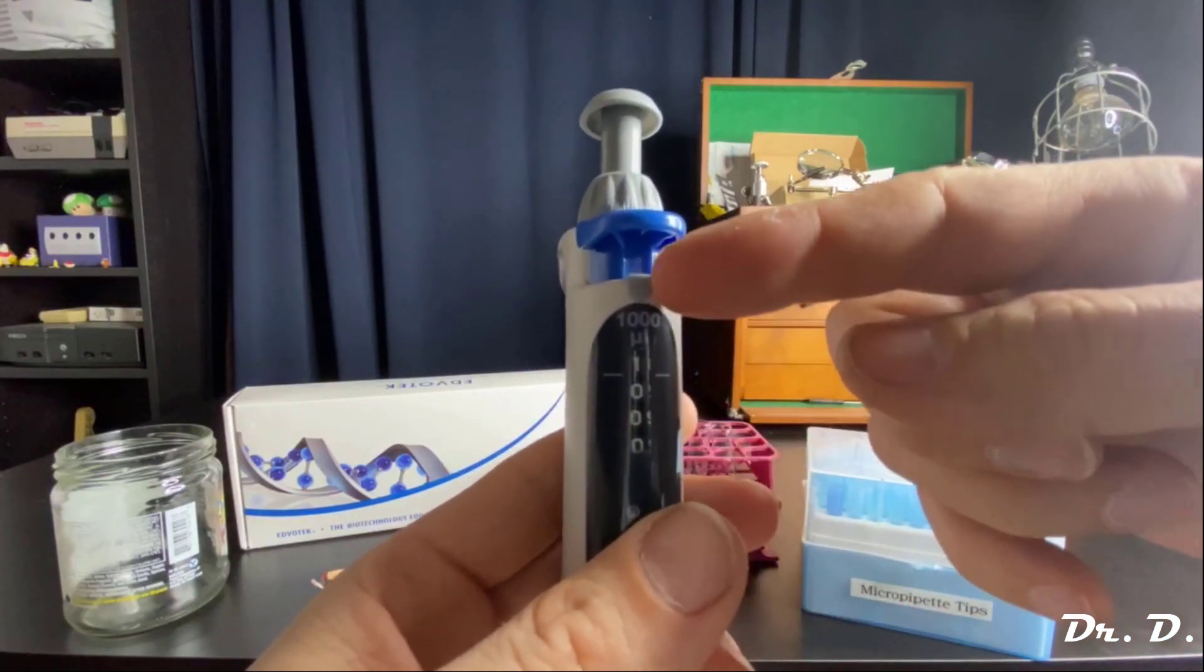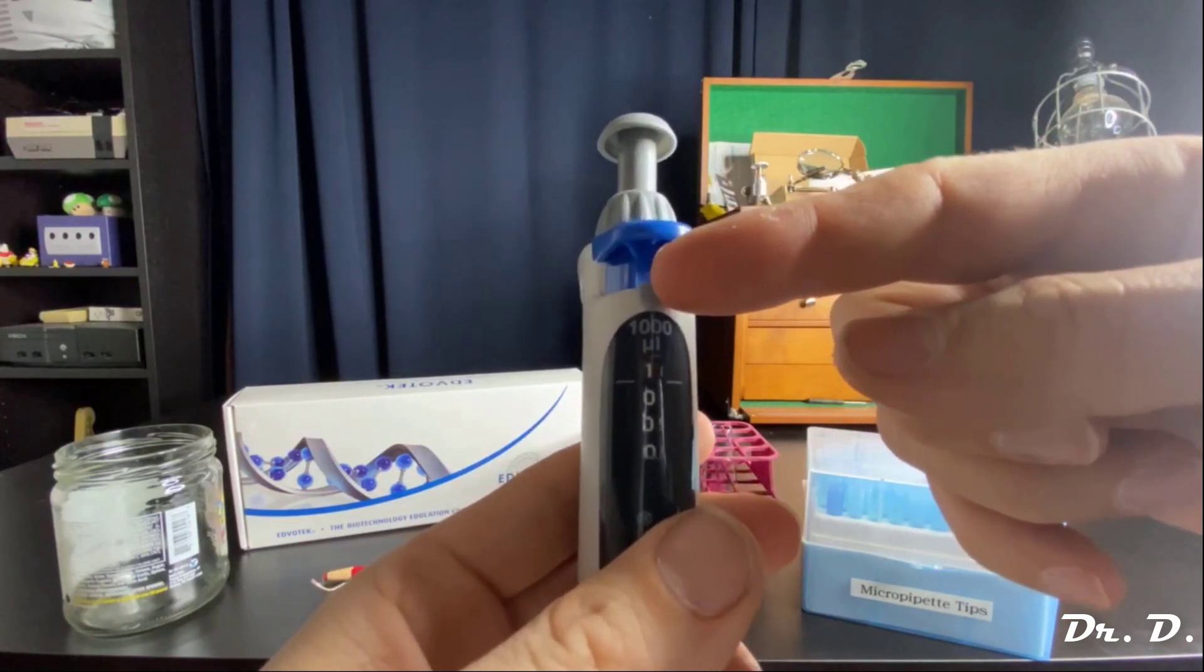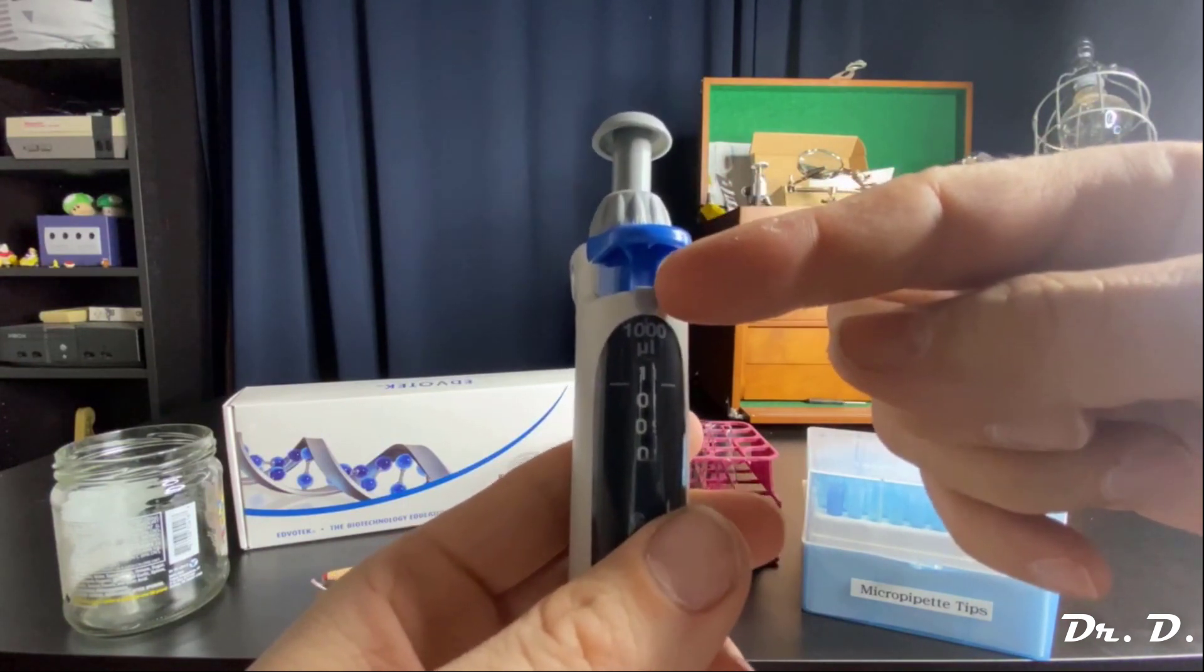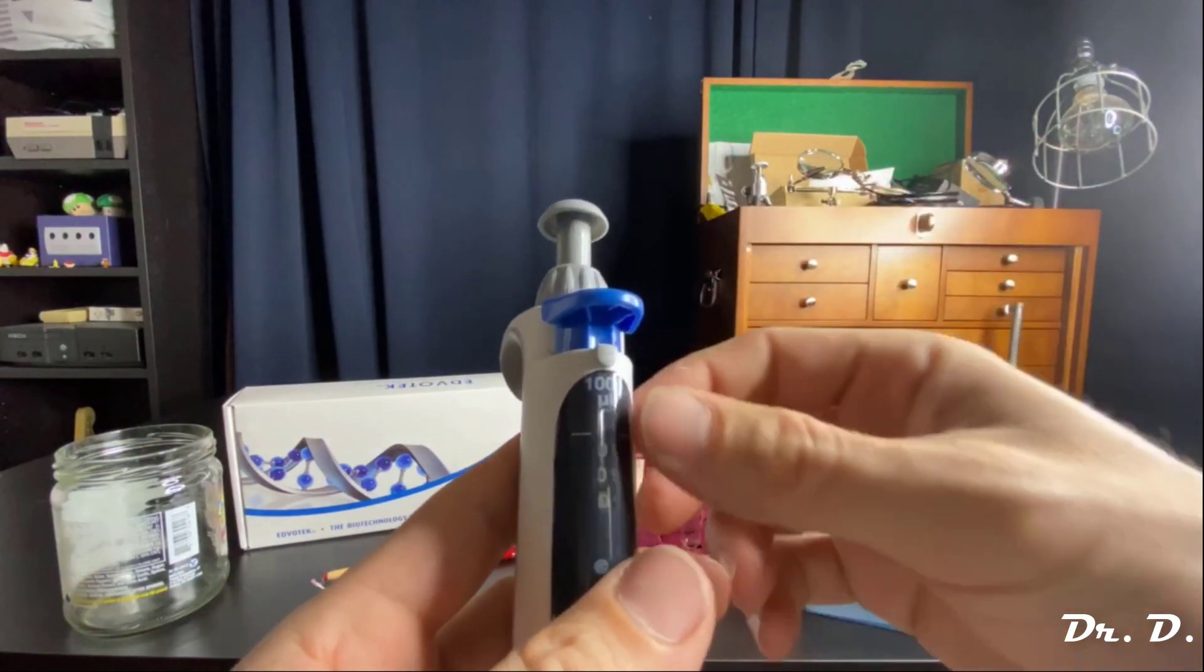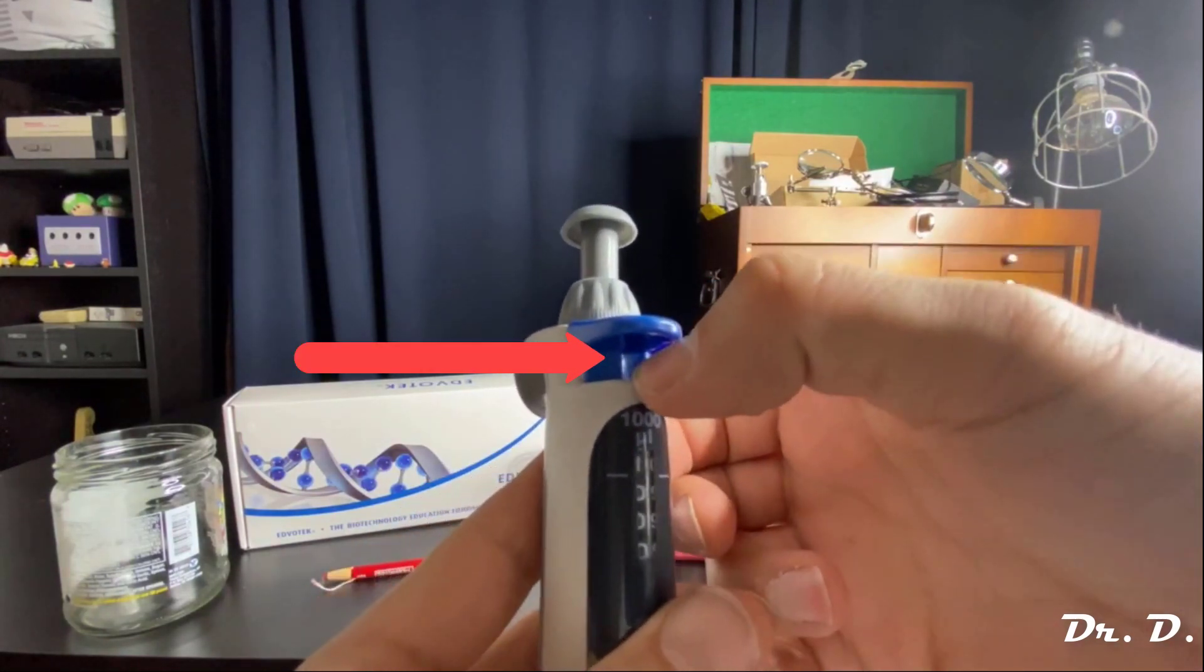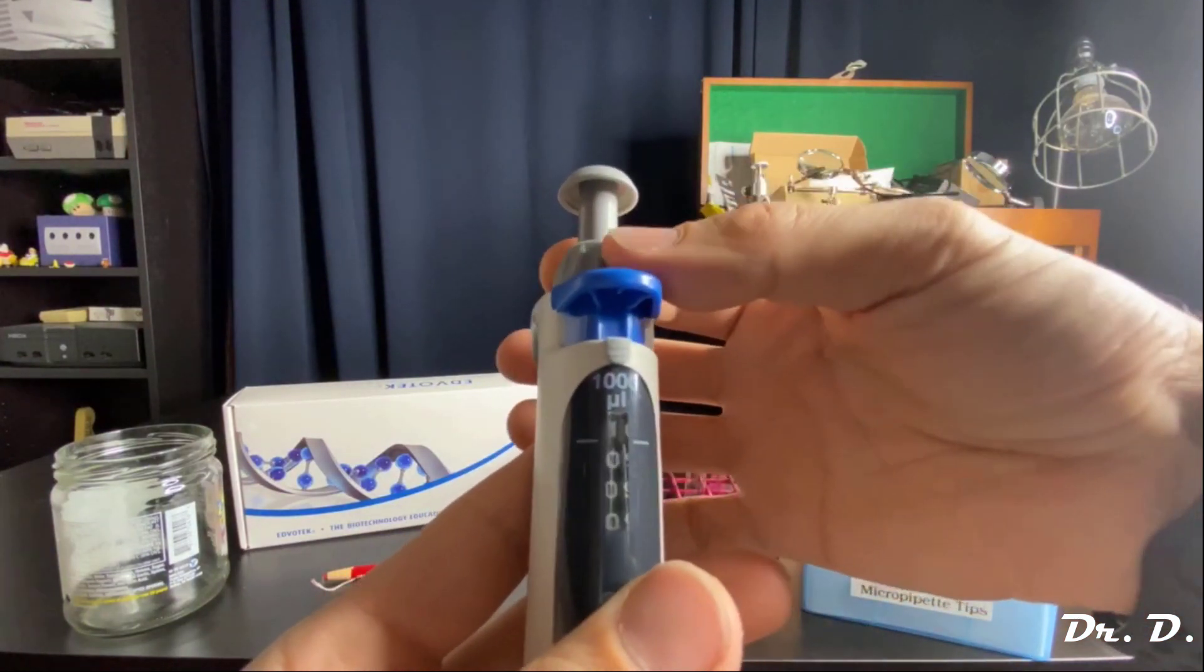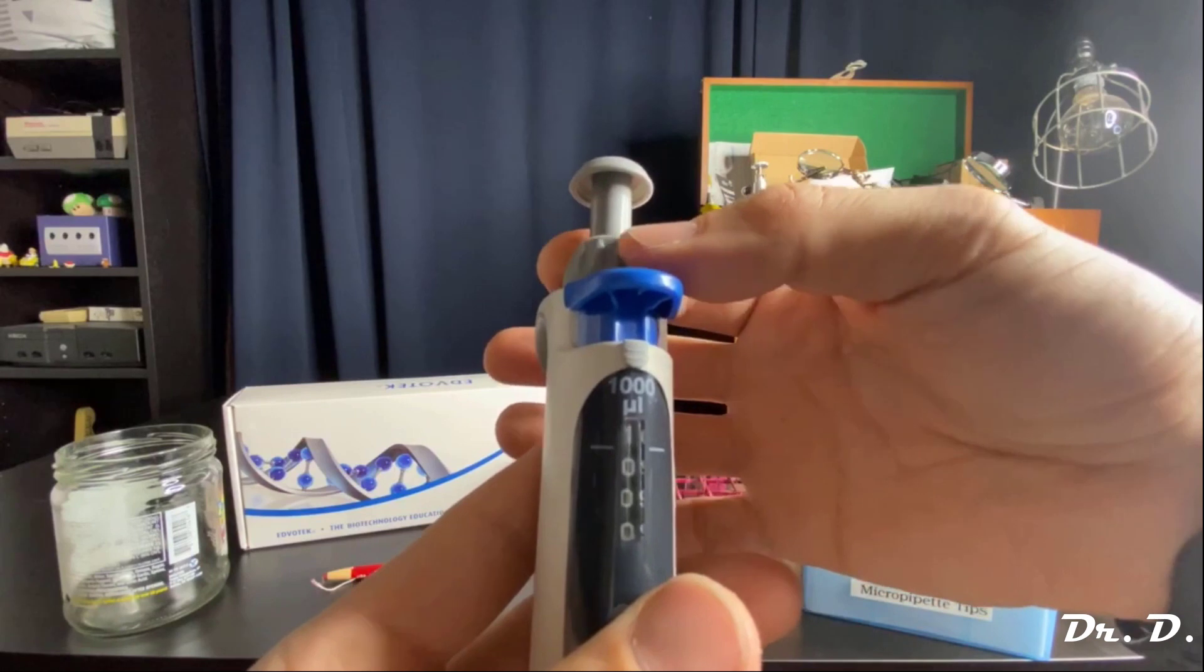This is something else that's kind of unique to these pipetmen. I have not seen this on other pipetmen, but you see this little gray dial right here. This little gray dial is a lock. So when you push that down, it locks the pipetmen. You see, now I can't turn my dial. That's a lock setting.